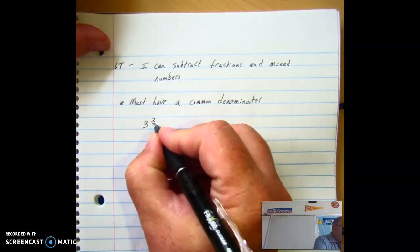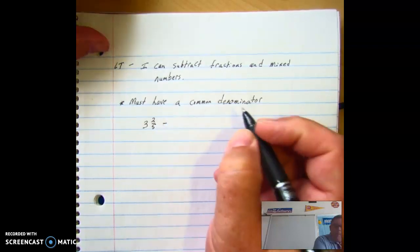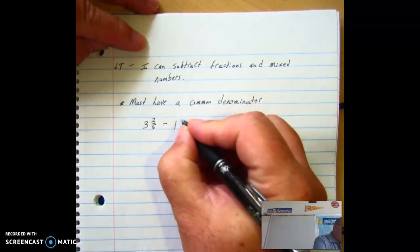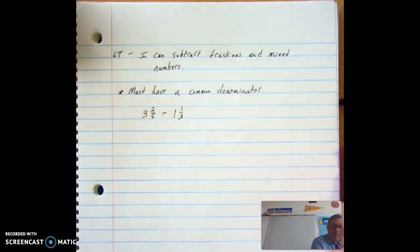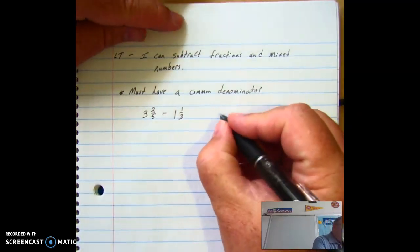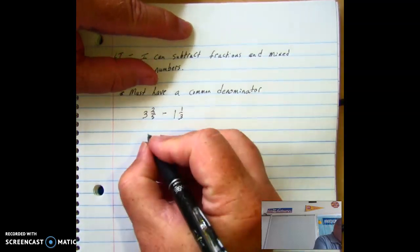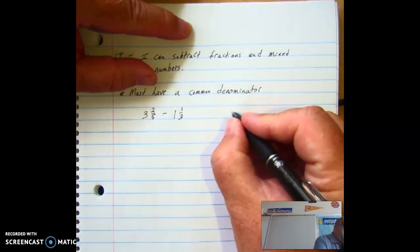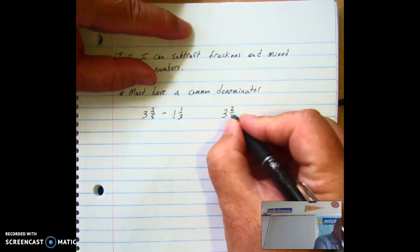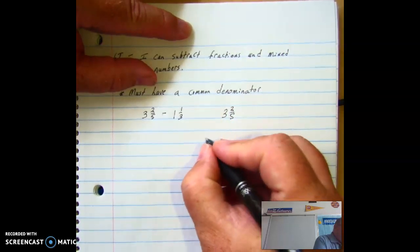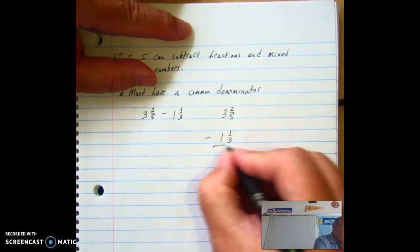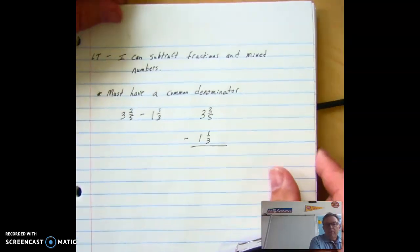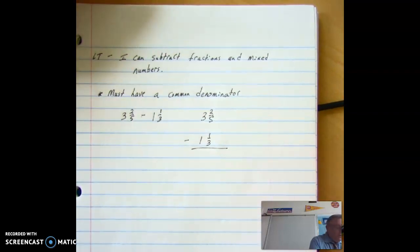So 3 and 2 fifths minus 1 and 1 third. Now I'm the kind of person that with common denominators and all of that, I'll have to set mine up vertically. So I'm going to just move it over here, 3 and 2 fifths. I'm going to give myself some space, 1 and 1 third.